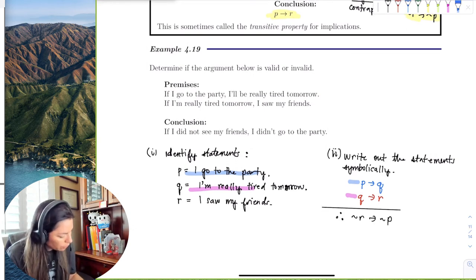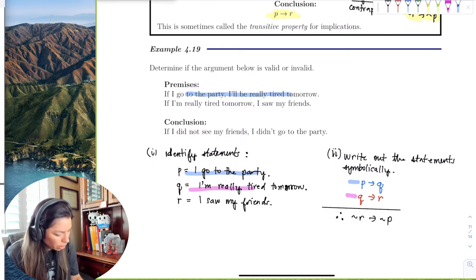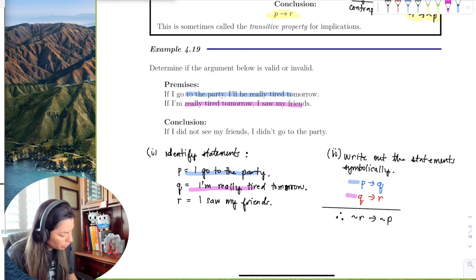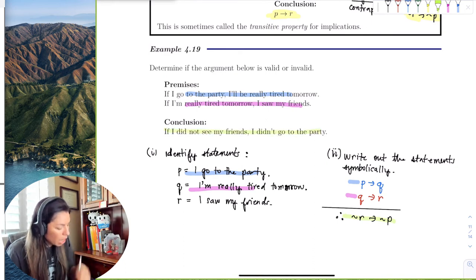So here is the first implication in blue, if P, then Q. The second implication of the premise would be, if Q, then R. And now the conclusion would be, I did not see my friends, so not R, then not P. I did not go to the party.